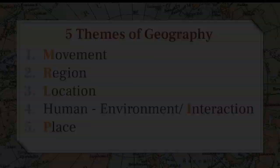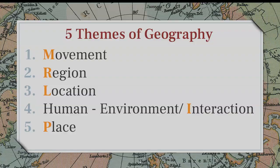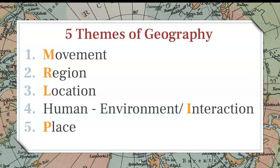There are five themes when we look at studying the earth. Those themes are movement, region, location, human environment slash interaction, and place. If you notice, all of the orange letters spell out MR. LIP — M-R-L-I-P. MR. LIP are your five themes of geography.